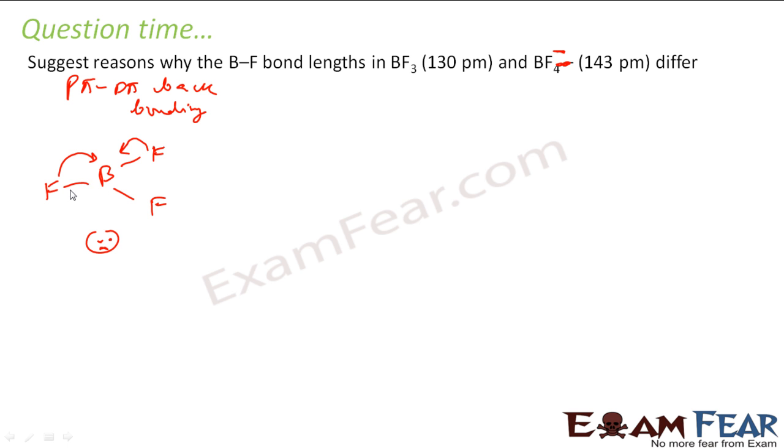With this, if you see, the BF bond actually acquires a double bond characteristic, since there is a transfer of electron here. So BF bond acquires almost double bond characteristic. Since it is double bond characteristic, the size of the bond decreases. The bond size decreases and it becomes 130.